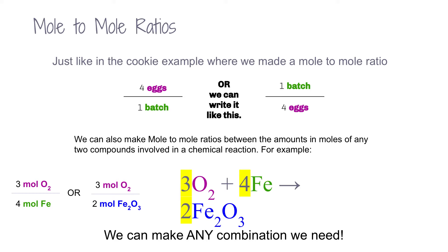we have 3 moles of O2 for every 4 moles of iron, or we could write it as 3 moles of O2 for 2 moles of iron oxide. You can make any combination you need to answer the problem.